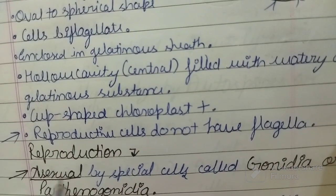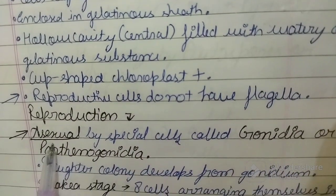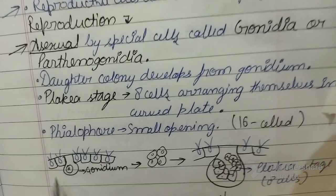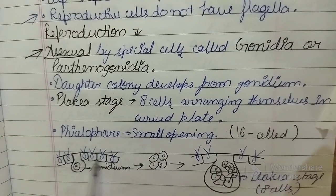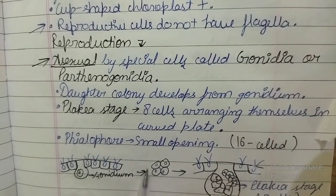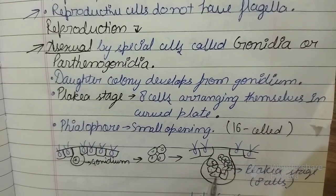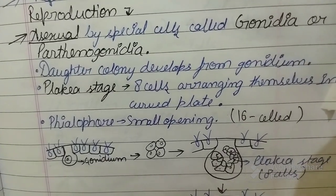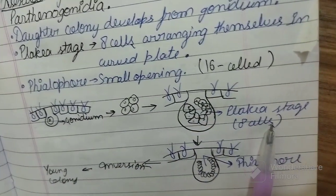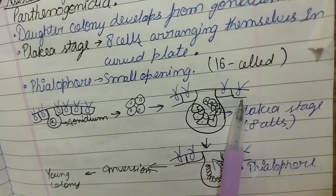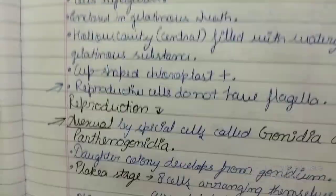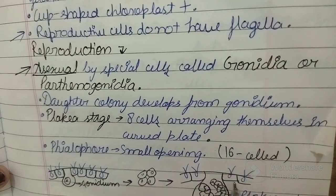Reproduction is by asexual means. Specialized cells called gonidia or parthenogonidia are formed. This is how a gonidium looks — one of the cells acts as a gonidium, which then moves to a four-celled stage and further divides into an eight-celled stage. This eight-celled stage is important and is called the plakea stage, which is a distinguishing feature for Volvox and is commonly asked in examinations. The plakea stage consists of eight cells arranged in a curved plate.